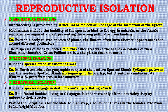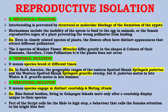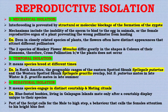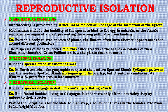Next is temporal isolation, meaning species breed at different times. For example, in North America the geographic ranges of the eastern spotted skunk, Spilogale putorius, and the western spotted skunk, Spilogale gracilis, overlap. However, Spilogale putorius mates in late winter while Spilogale gracilis mates in late summer — a clear example of temporal isolation.